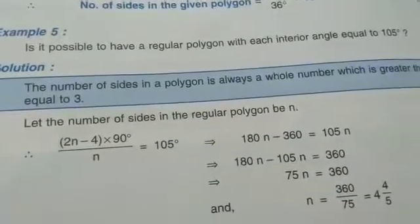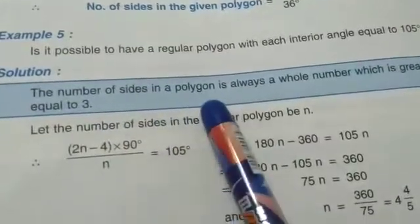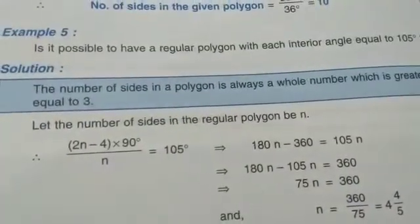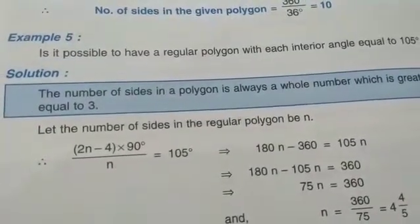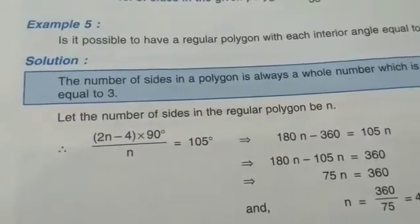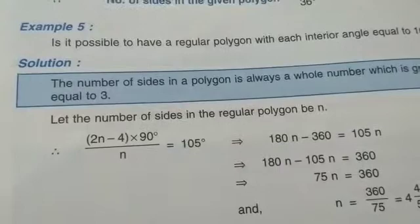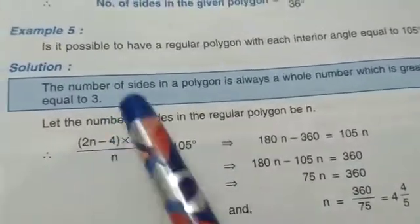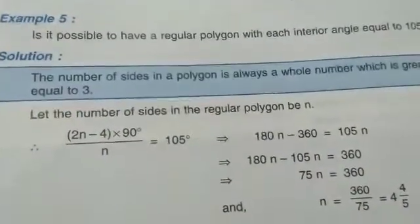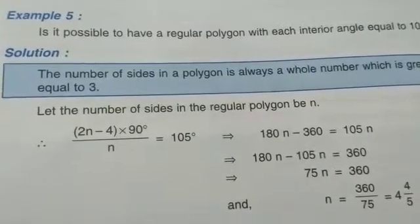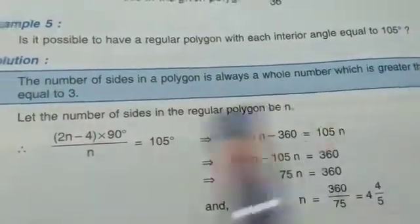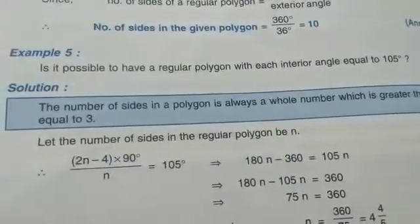Now before answering this question, see this statement: the number of sides in a polygon is always a whole number which is greater than or equal to 3. When we draw a polygon, the minimum number of sides is 3, because using 2 sides we can't draw a polygon. The smallest polygon is a triangle having 3 sides. So we should check whether the number of sides is a whole number and whether it is greater than or equal to 3. For these types of questions, we find the value of n and check if it is a whole number and n is greater than or equal to 3.